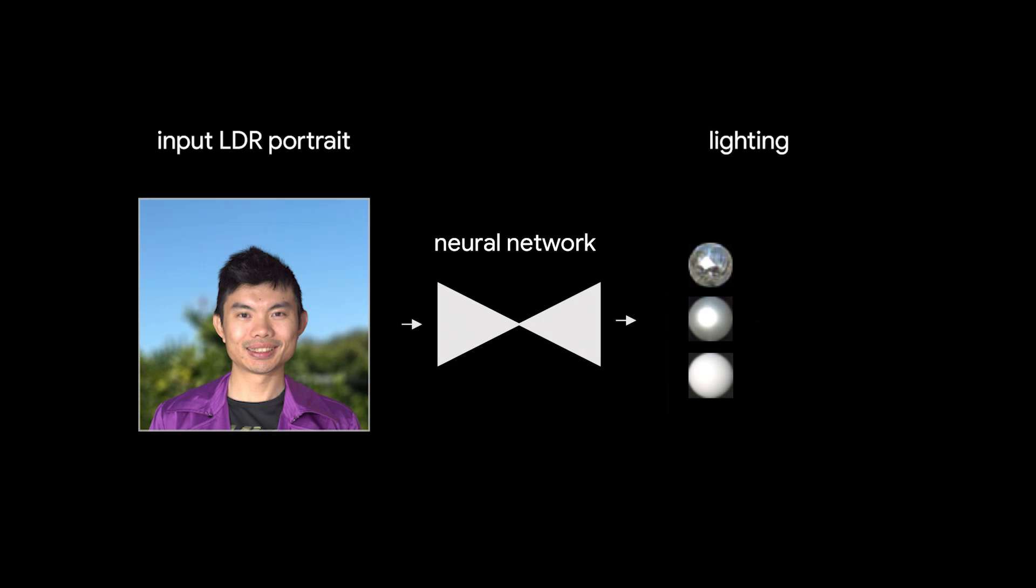With this data, we train a neural network that outputs a 32x32 mirror ball image of the HDR illumination. We minimize a multiscale rendering loss for the three deep light sphere images, and a multiscale adversarial loss on the mirror ball.